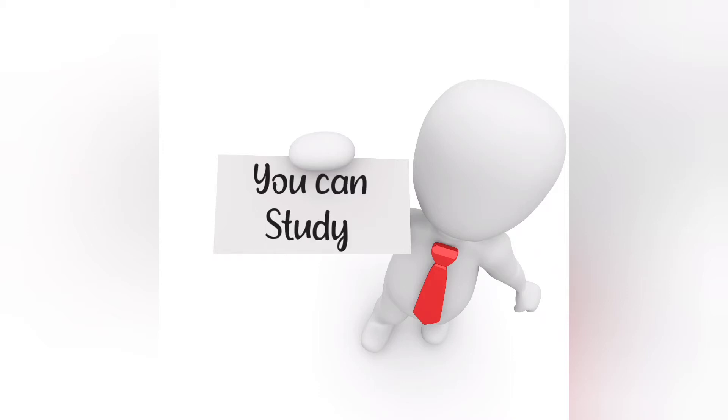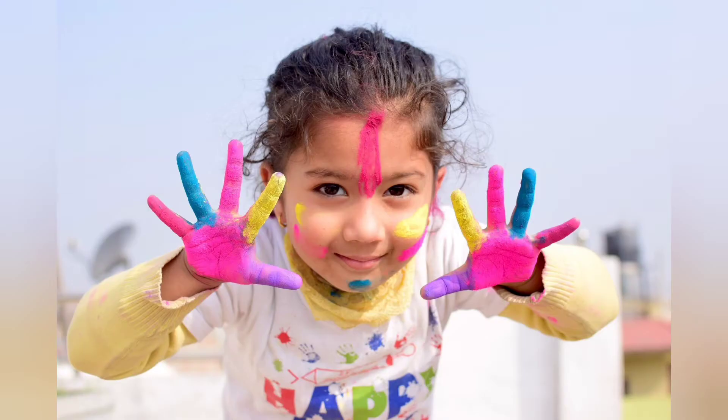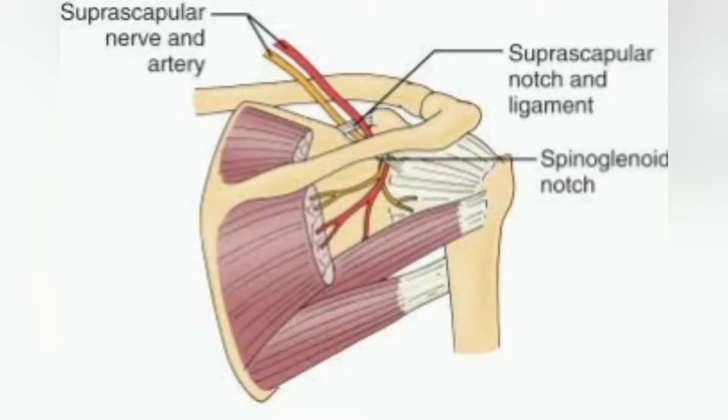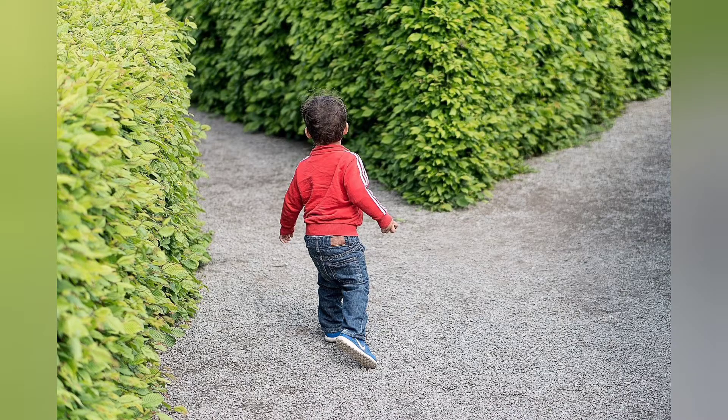Do you know that you can study and memorize intermuscular spaces of upper limb just with your fingers? And have you ever confused the structures passing above and below the ligament which forms the suprascapular notch? If yes, watch the video fully to make your concepts clear.